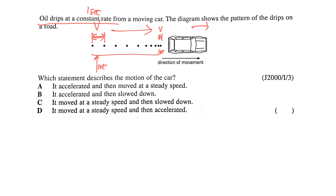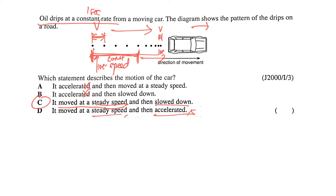Looking at the options, acceleration and steady speed — both warrant checking. The car doesn't accelerate throughout; it actually slows down. Observing the dots carefully, the earlier part of the journey has equal spacing, meaning constant speed, and from a certain point onwards it starts to decelerate. So the answer is C.